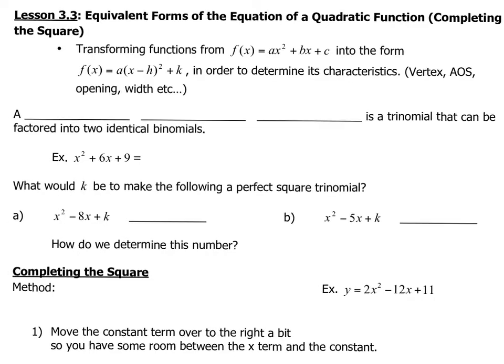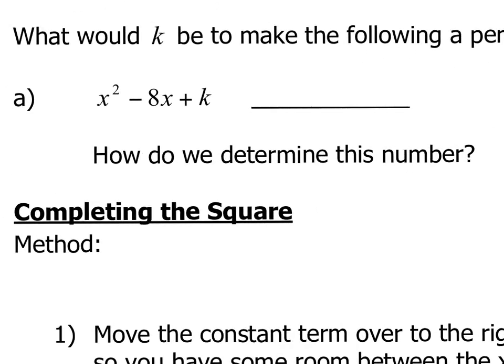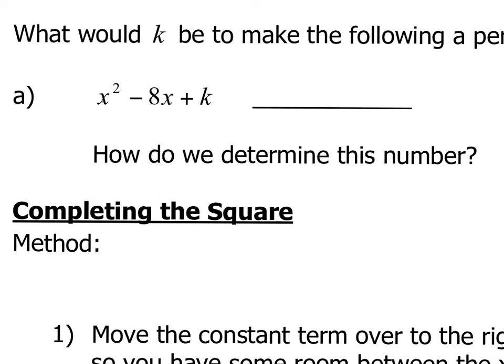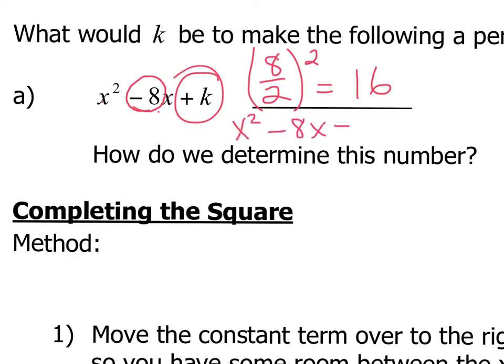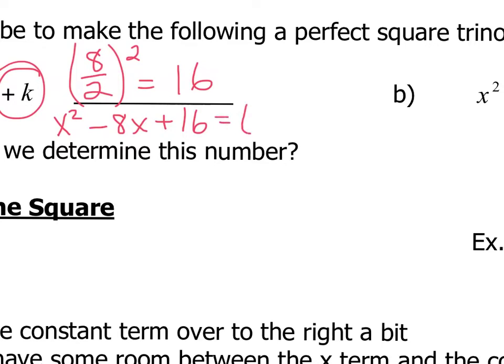Now let's have a look at how we make a perfect square trinomial if we only have the first two parts. So right now what we only have is we have an x squared and we have an 8x. So we need to figure out what this plus k is going to be. Now the way to do that is by taking this number right here and dividing it by 2 and then squaring it. So then that becomes 16. So now by completing this perfect square trinomial, we end up with x squared minus 8x plus 16. And this can be factored into x minus 4 squared.